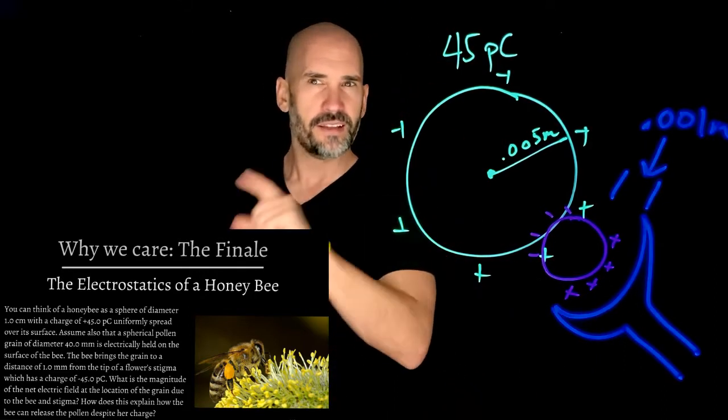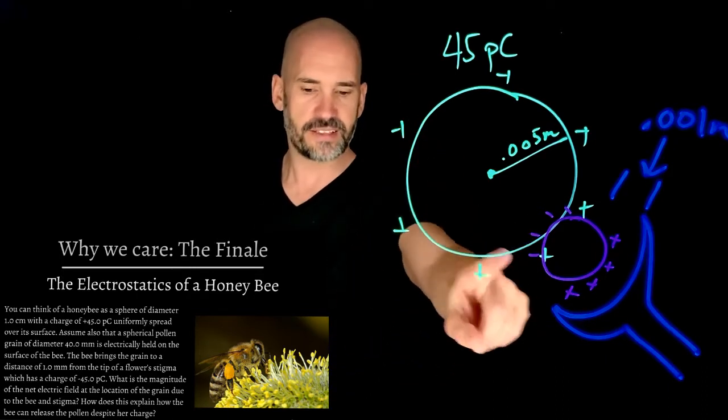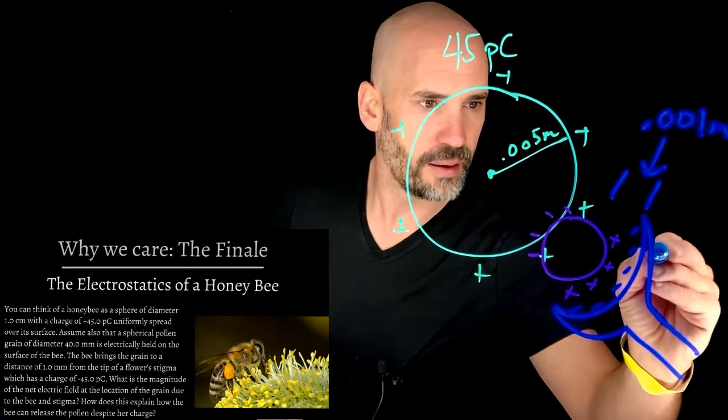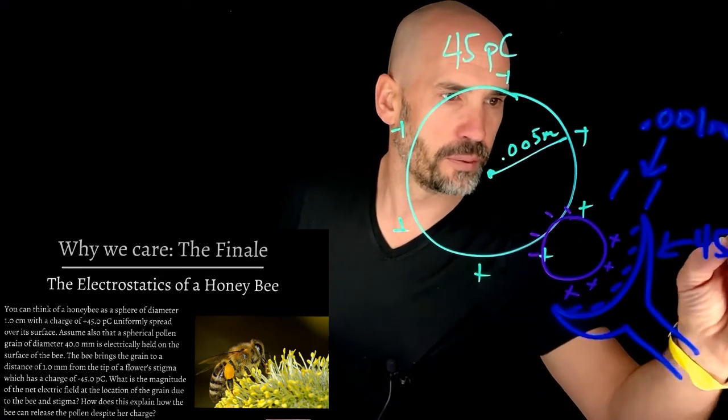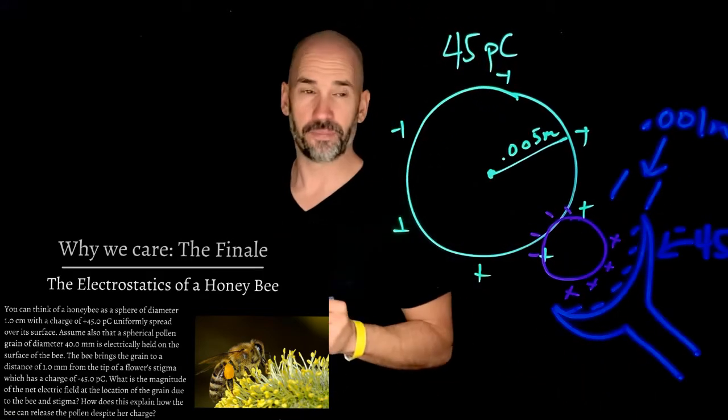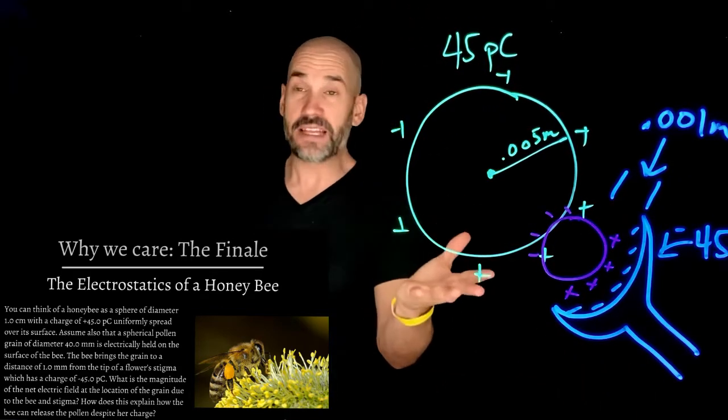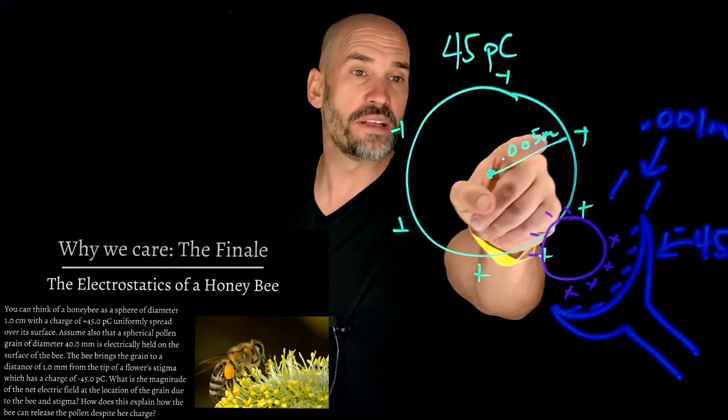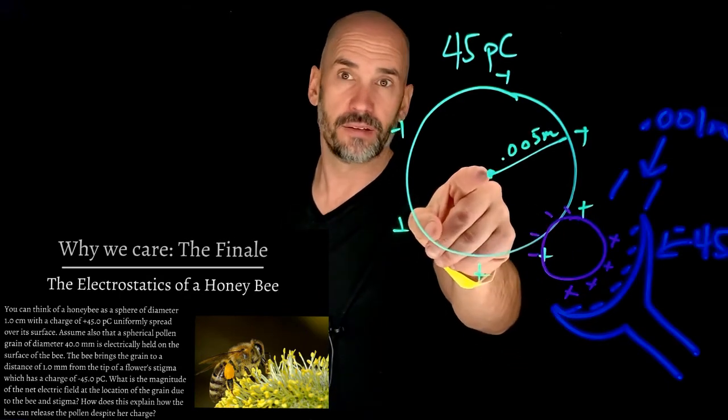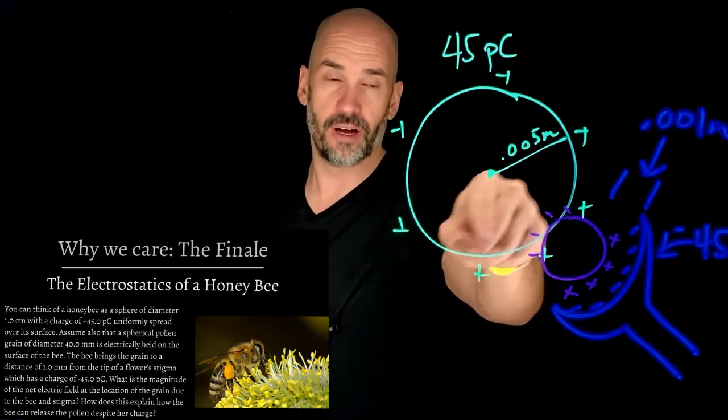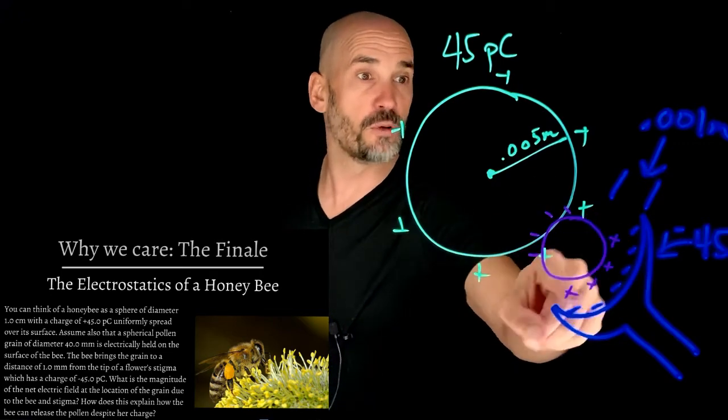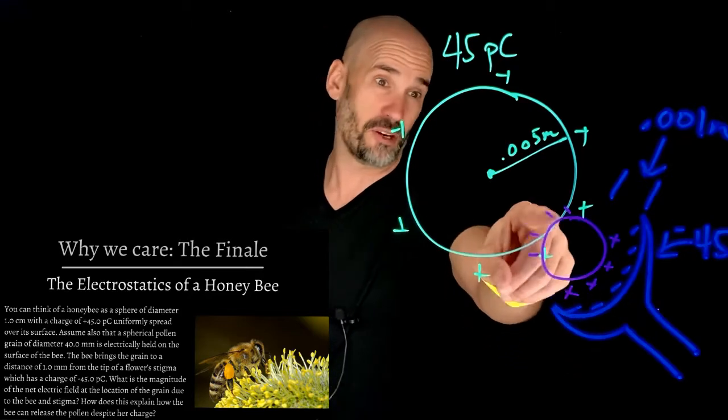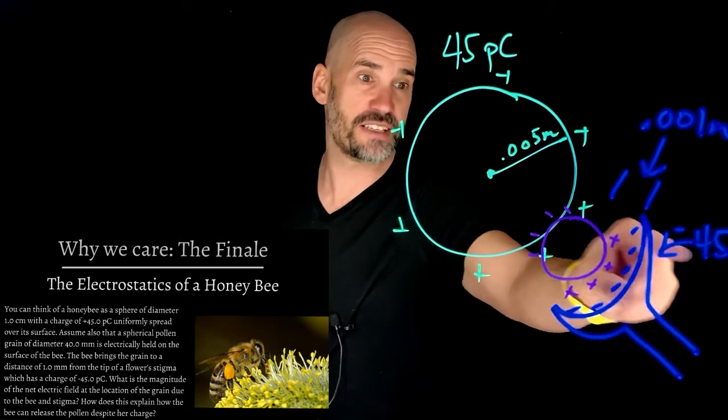And this distance here is not 0.005, but 0.001 meters, or one millimeter. Okay. All right. Much closer. So that's a hint right there. And it says that this stigma has actually a negative charge. Right. About the same charge, about 45 picocoulomb, but it's going to be negative now. Okay. So this explains everything. So if you have something here that's 0.005 meters away from the center of this bee, right, and this is closer, it's 0.001, where do you think this pollen is going to want to go?